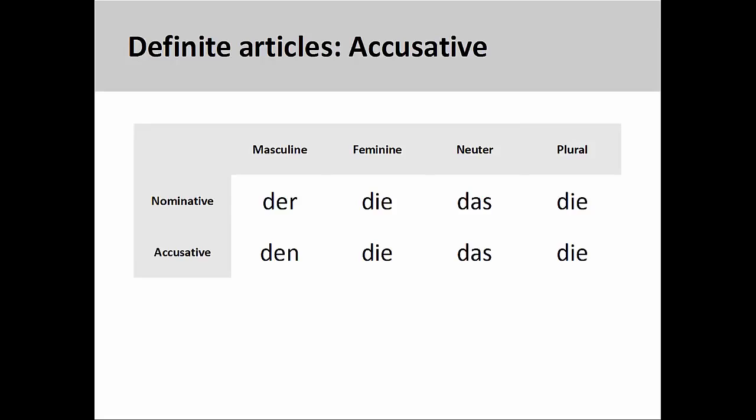The second row of the chart would be definite articles in the accusative case. These definite articles mark the noun that follows as being the direct object of the sentence — in other words, the noun that receives the action performed by the subject of the sentence.